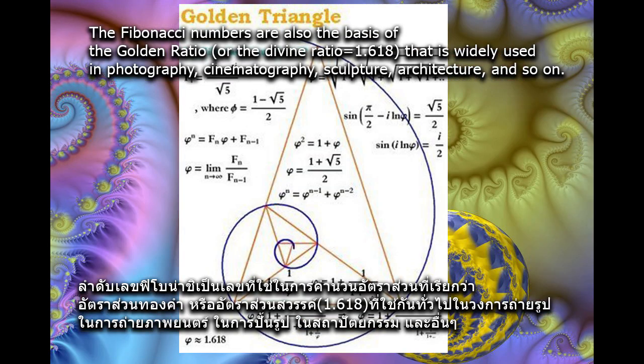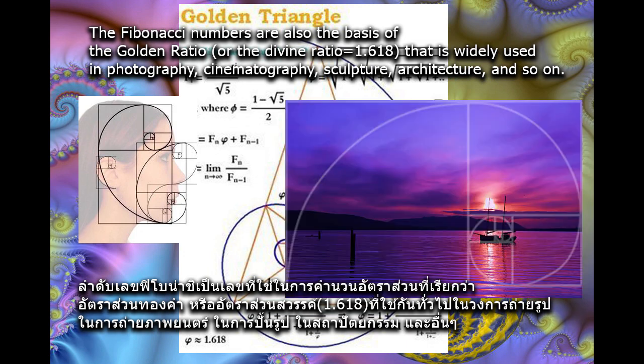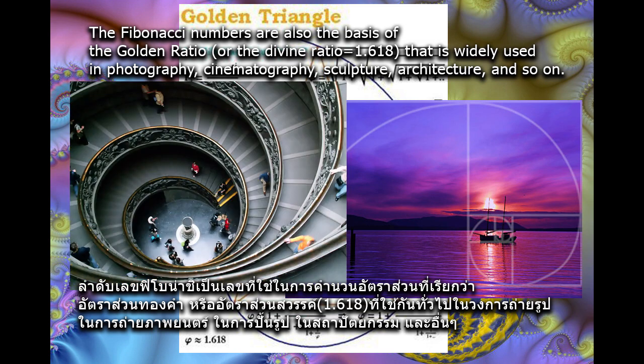The Fibonacci numbers are also the basis of the golden ratio, or the divine ratio, that is widely used in photography, cinematography, sculpture, architecture, and so on.